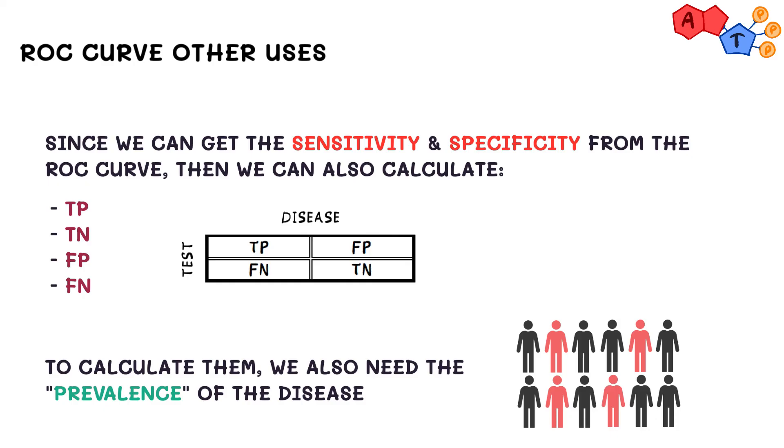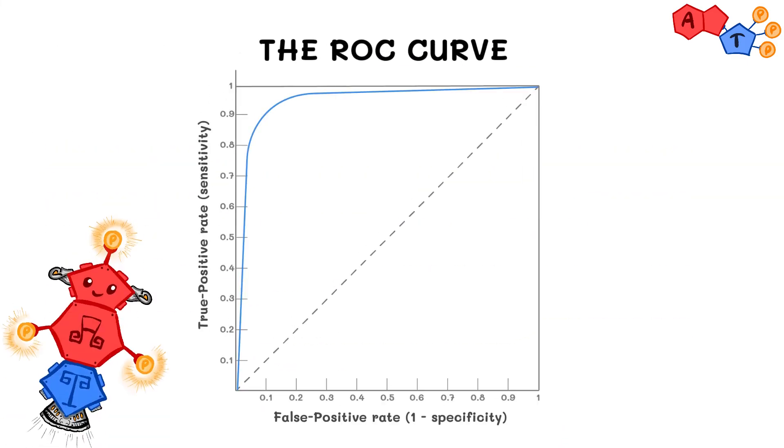Using this given, we can actually find out the true positives, true negatives, false positives, and false negatives. Turns out the ROC curves can do a lot of cool things, huh?